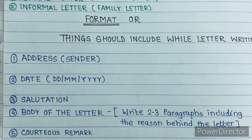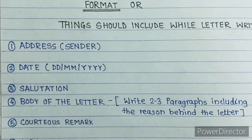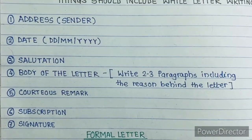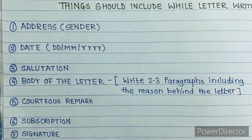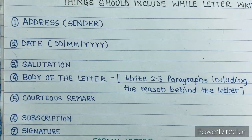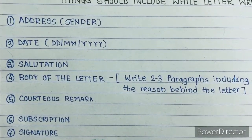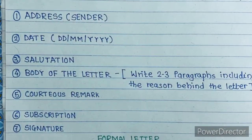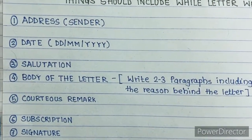First we will see informal letters. What kind of things should we include while writing the informal letter? There are seven things. First one is the address of the sender. At the left side of the corner we should write our address, who is writing the letter. Then next one is the date. Date should be in DD/MM/YYYY format. Next one is the salutation, according to the relations we are having with the person to whom we are writing. Next one is the body of the letter, which should include two or three paragraphs.